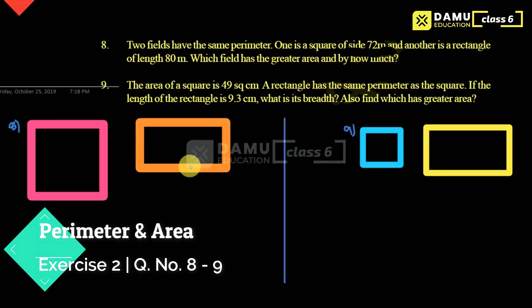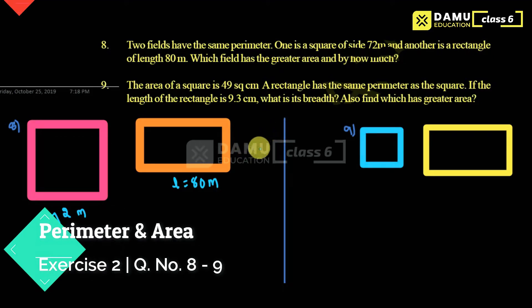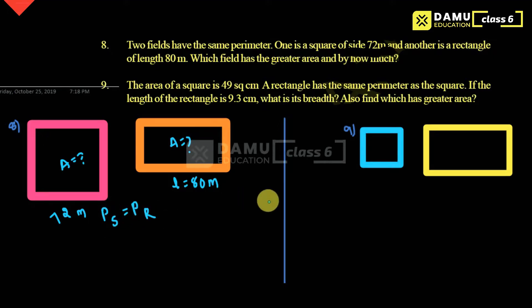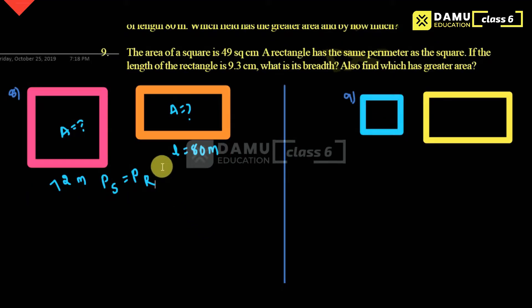So here in this module we are going to discuss what is the 8th question. Two fields have the same perimeter — one is a square of side 72 meters, and another one is a rectangle of length equal to 80 meters. Which field has greater area and by how much? We have to find the area of each. Both perimeters are given as equal, so we have to find which will have the greater area.